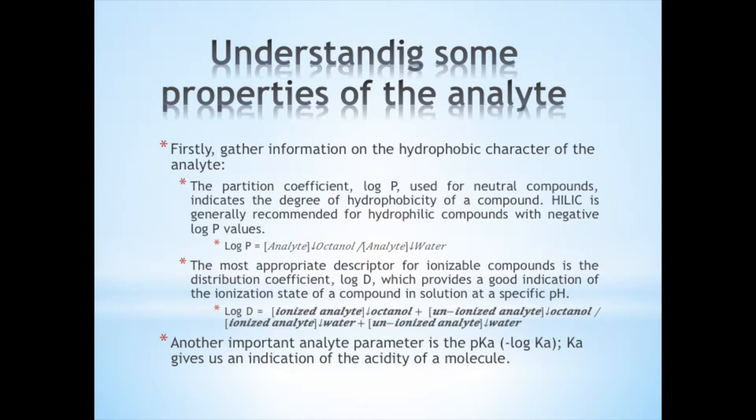Log D provides an indication of the ionization state of a compound in a solution at a specific pH, and is more representative of the hydrophobic character in proper conditions than log P. This is due to log P being more used for neutral compounds, while log D is used for charged compounds. As you can see in the equation, log D employs the concentrations of the ionized and unionized forms of the analyte in the solution. In HILIC, larger values than 1 in log D is required to determine how ionizable the analyte is. Log D is pH dependent. The pH at which the log D was measured must be specified.